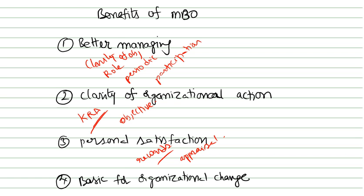The last benefit is basic organizational change. With proper guidelines and good implementation of MBO, the organizational structure will upgrade itself. MBO provides a good framework and guidelines for planned change, enabling top management to initiate change. It enables the organization to upgrade to the next level, depending on internal and external factors.